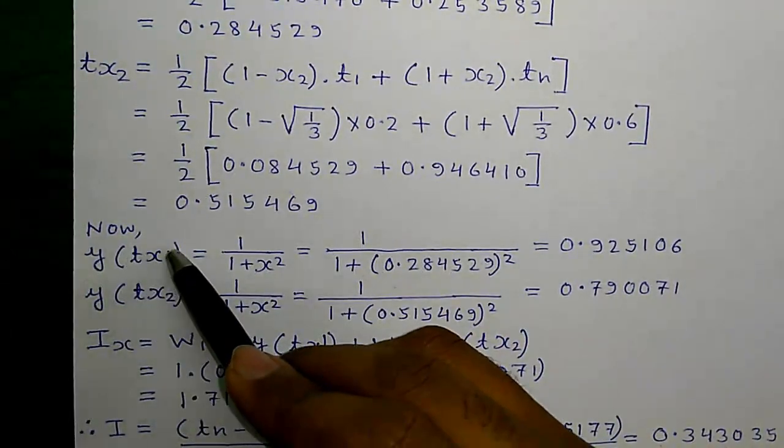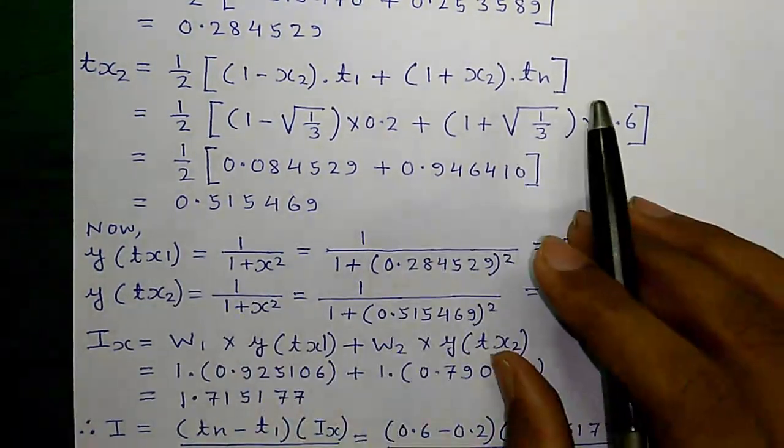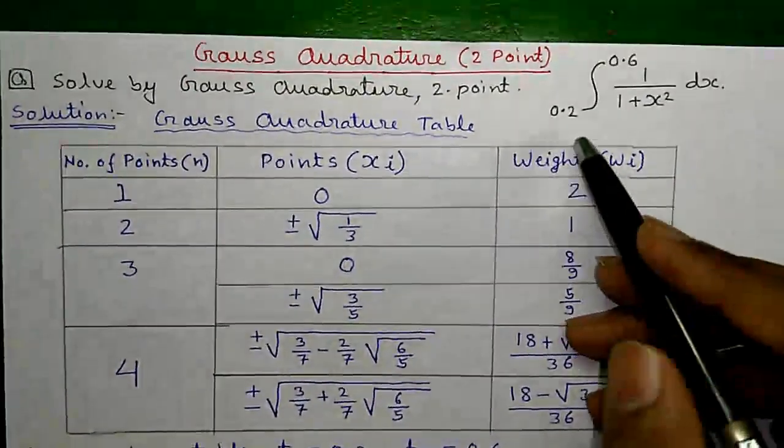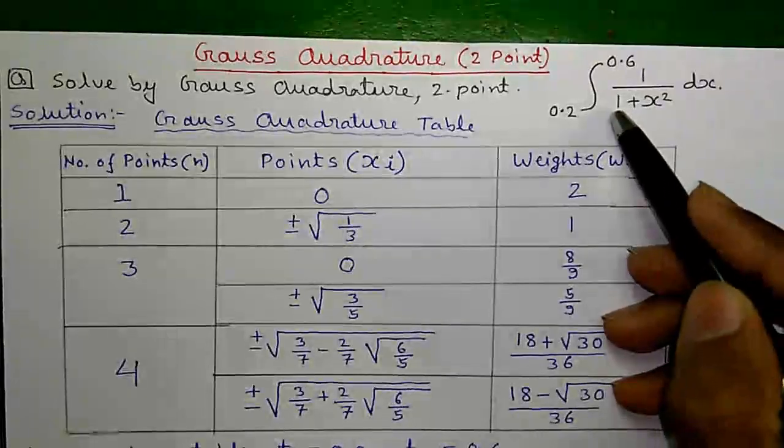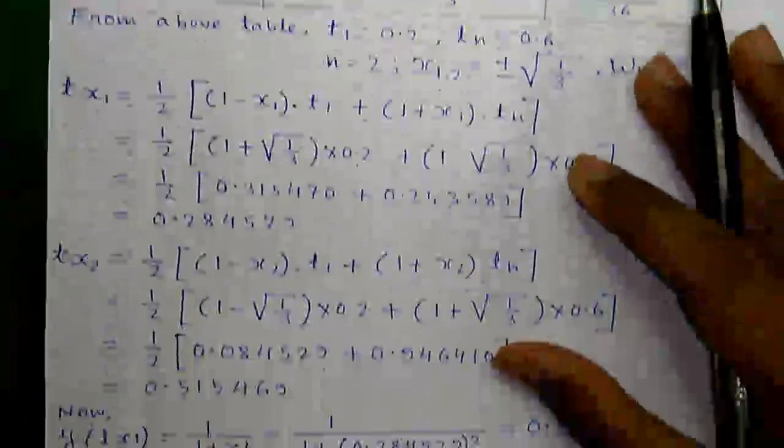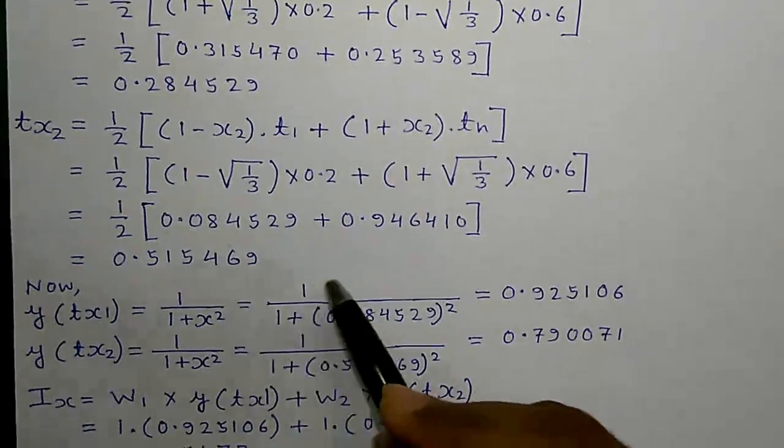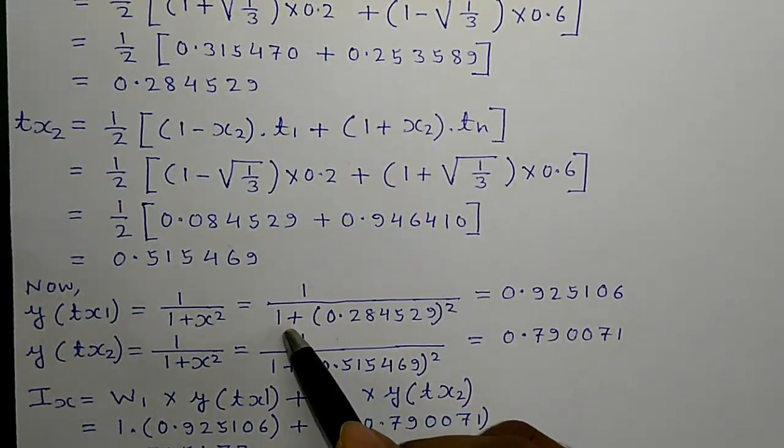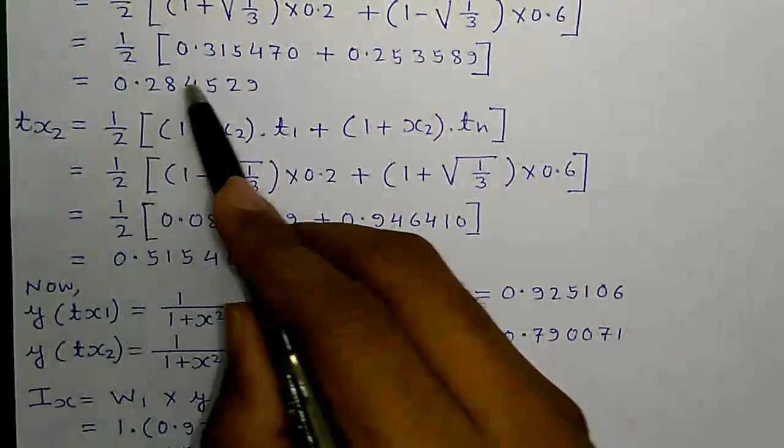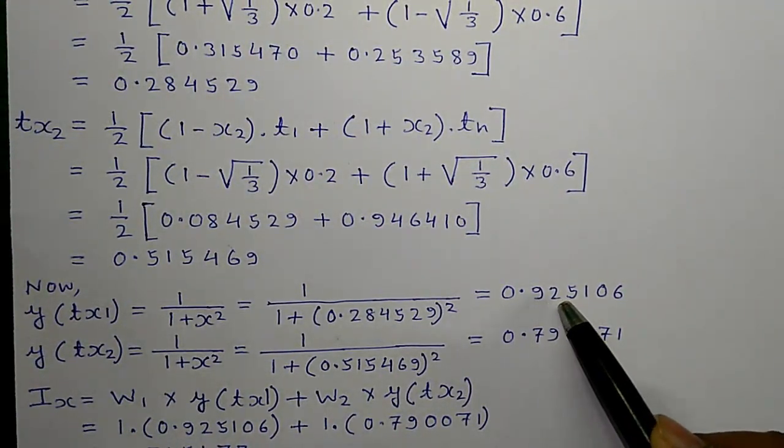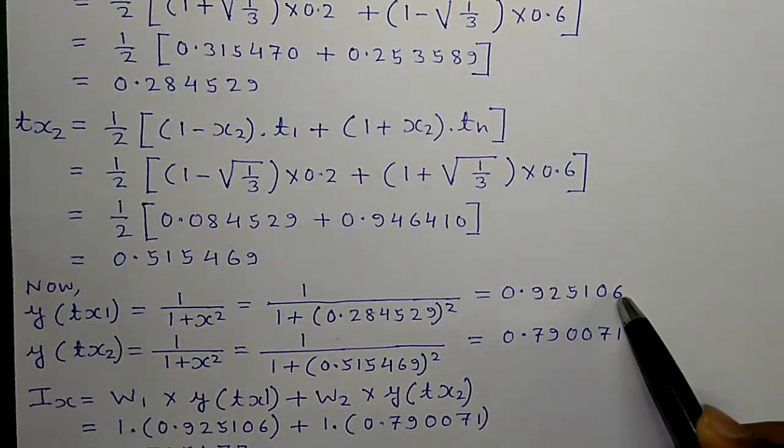Now, we will calculate the y of Tx1. So, our original expression which we need to find out the integration of that is 1 divided by 1 plus x2. Now, we will put the value of Tx1 in place of x here. So, we will get 1 divided by 1 plus Tx1 is this value whole square equals to 0.925106.